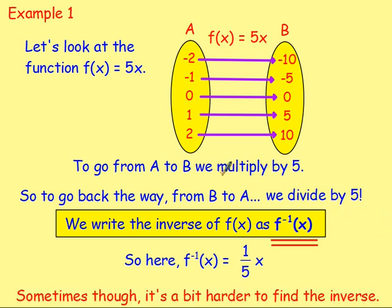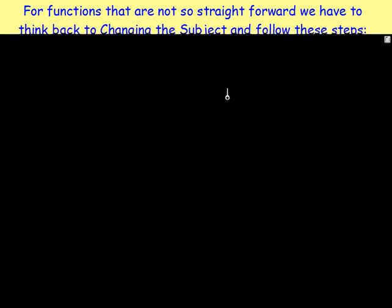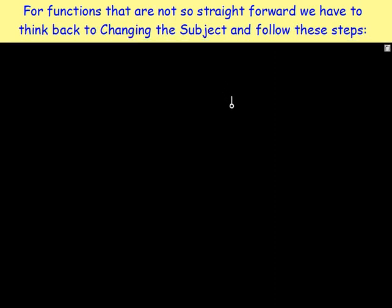Obviously for this one it is quite easy — multiplying by five, the opposite is divide by five. But some of them are a lot harder, and there are different steps that make it quite simple. For functions that are not straightforward, we have to think back to changing the subject and follow these steps.